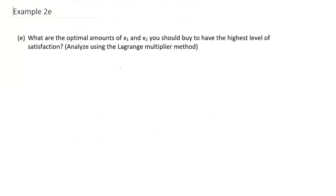What we just showed in Part D of this example is how to do constrained optimization using the substitution approach. An alternative approach we can use for constrained optimization is the Lagrange multiplier approach. In Part E of this example, we're going to optimize the same function we looked at in Part D, but this time we're going to use the Lagrange multiplier approach instead of the substitution approach.